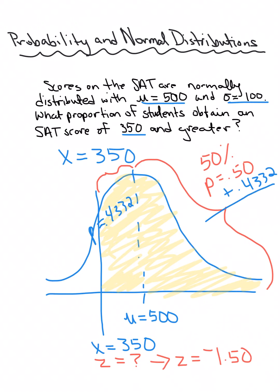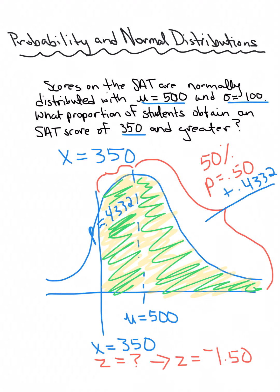That gives us the total amount. That basically tells us this entire half of the distribution, which is 0.50, plus this sliver together, which would be P equals 0.9332. That would be your final answer. Now, often the only time you ever need to add the two proportions together is when you're crossing over the mean. That's the only time you would need to add.